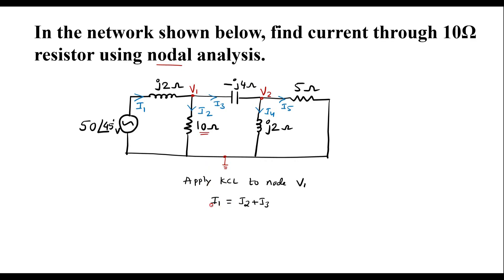After writing this, we need to represent currents in terms of voltages. So I1 can be represented as (50∠45 − V1) divided by J2. That is (50∠45 − V1) / J2 is equal to I2, which is V1/10 (since the reference node voltage is 0), plus I3, which is the potential difference between the two node voltages divided by −J4, that is (V1 − V2) / (−J4).